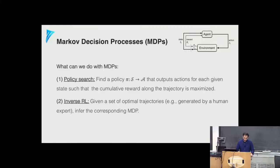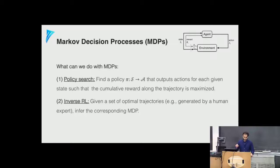What can we do with MDPs? One thing is to learn a policy that outputs actions given states such that the cumulative reward over the trajectory is maximized — this is the goal of policy search. The other is identifying the MDP or the reward function from collected trajectories (possibly generated by a human expert), trying to infer what reward function a rational agent would have optimized to produce those trajectories. This is called inverse reinforcement learning.